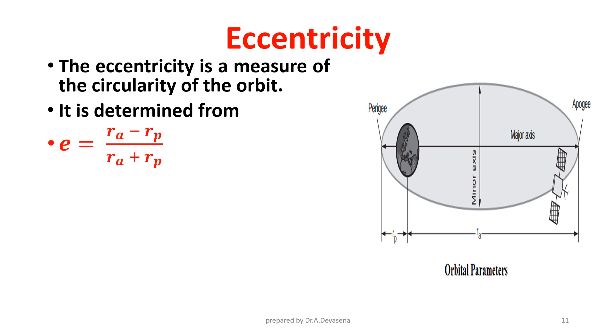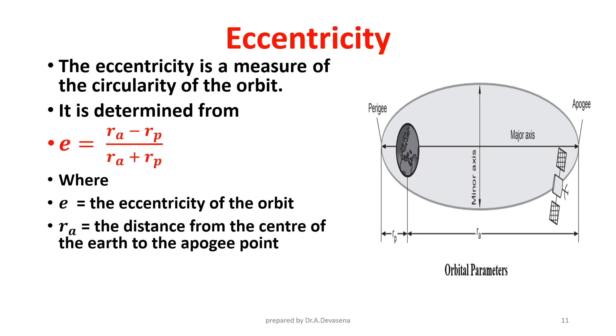Where E is the eccentricity of the orbit, R_A is the distance from the center of the Earth to the apogee point, and R_P is the distance to the perigee point.